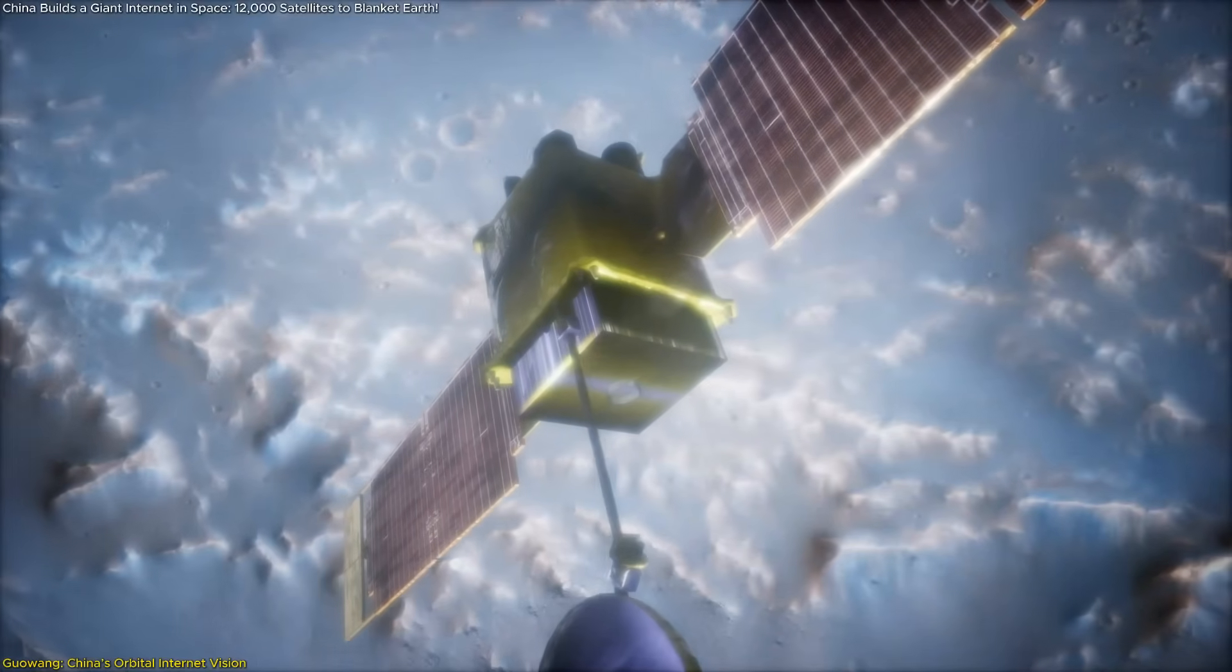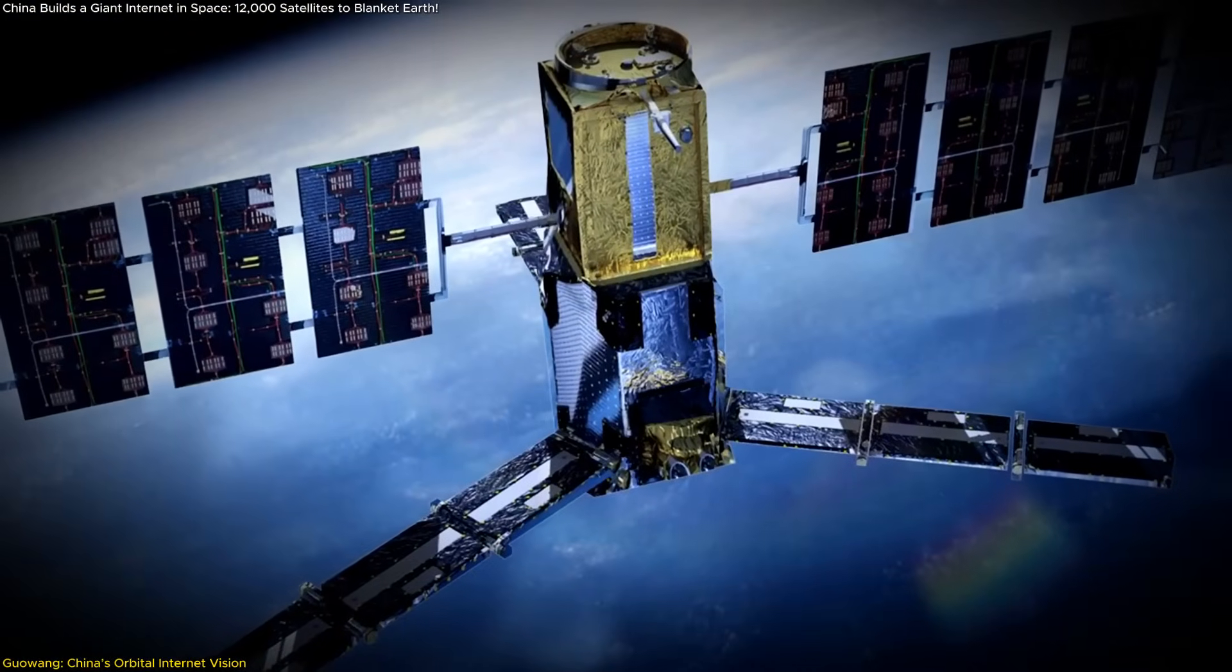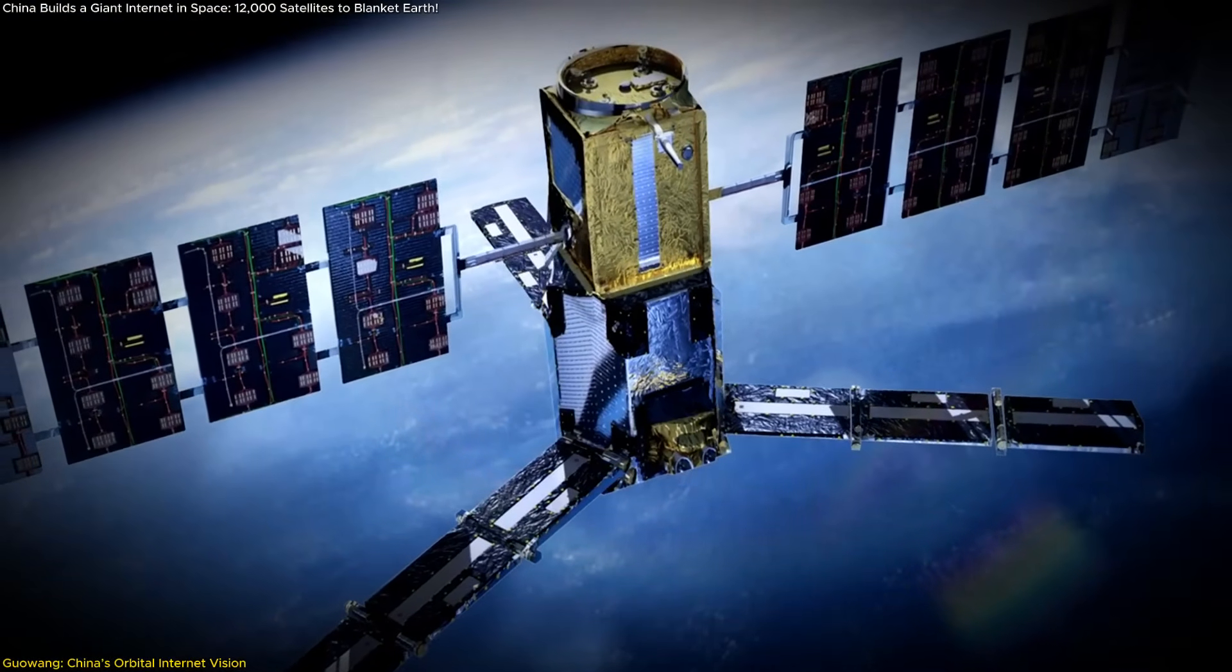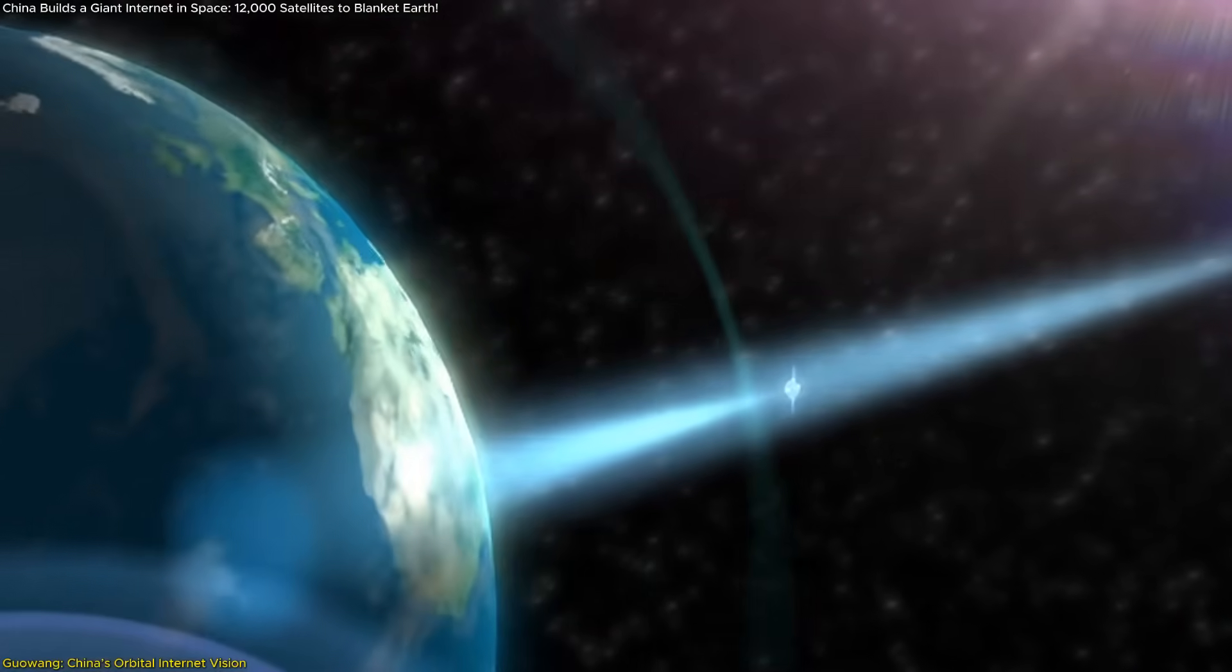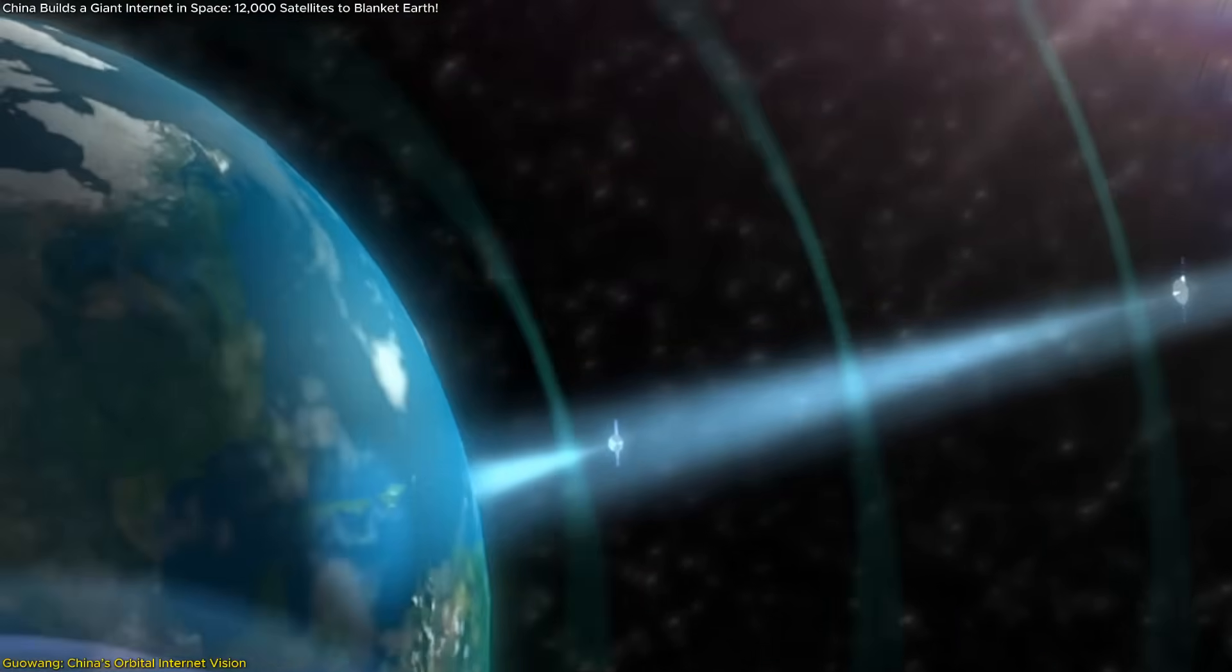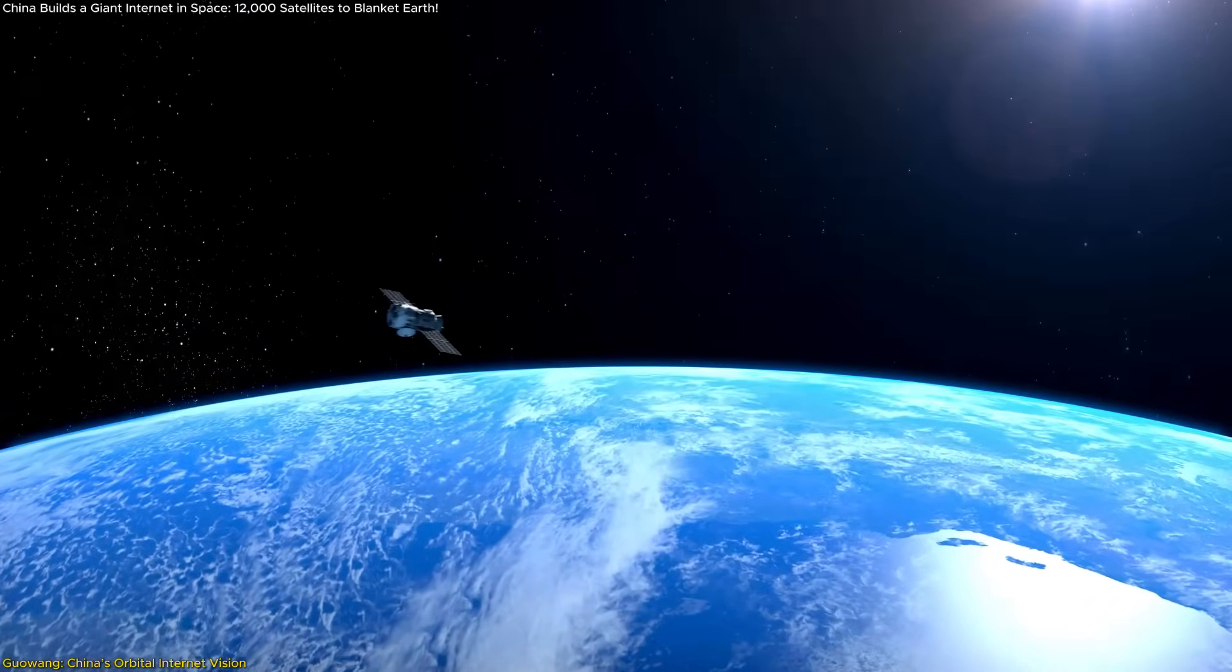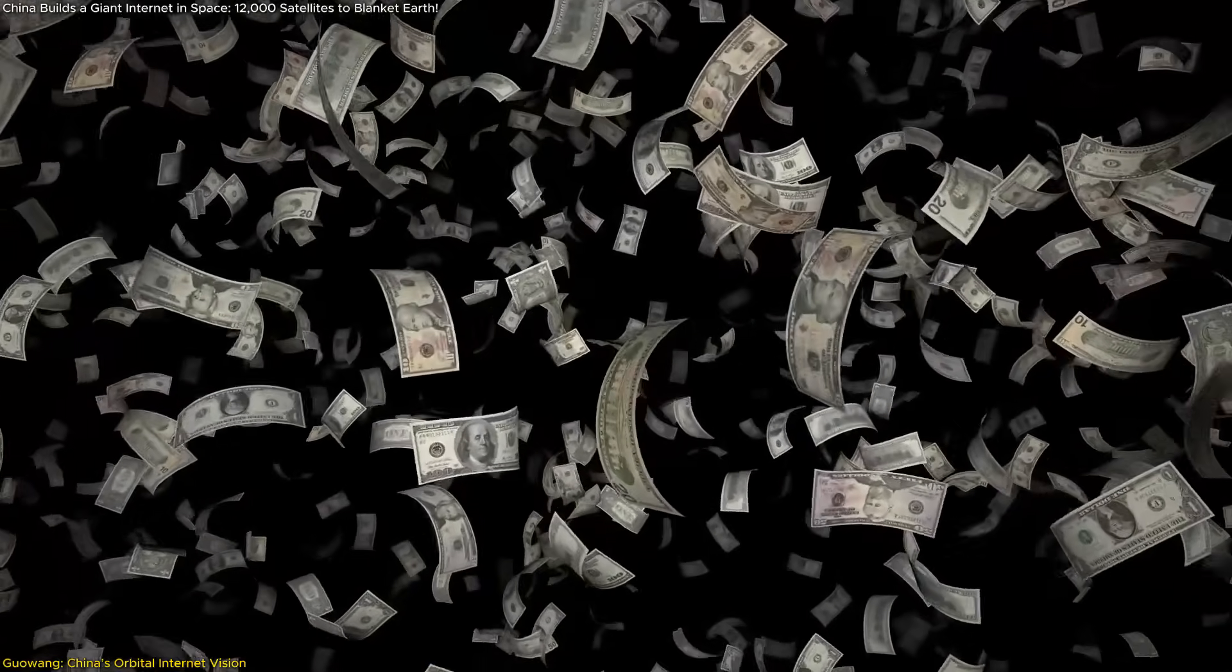To hit its first major milestone, China is aiming for 400 satellites in orbit by 2027. By 2029, that number is projected to rise to at least 800. Missing these targets could mean penalties for the companies involved, so pressure is building.